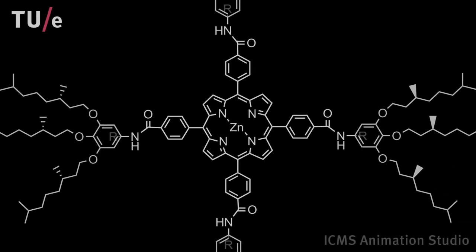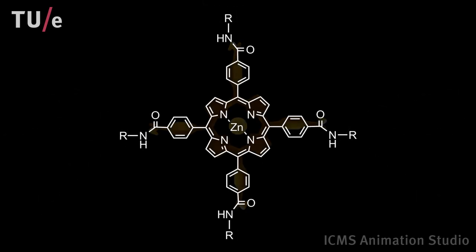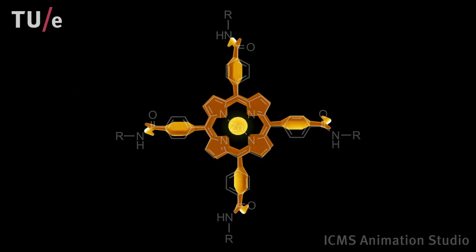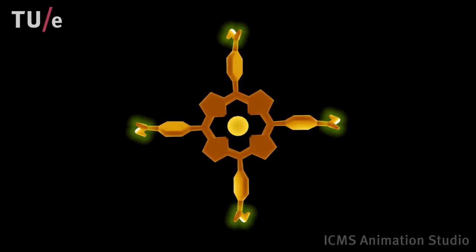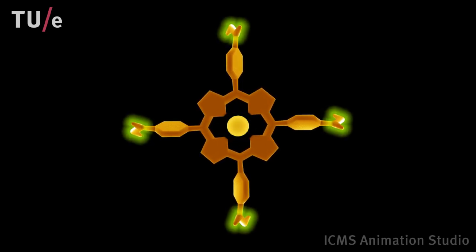This animation represents the multi-component self-assembly of supramolecular porphyrin stacks. The porphyrin monomers have zinc ions inside the macrocycle and possess an amide bond in order to form intermolecular hydrogen bonds.